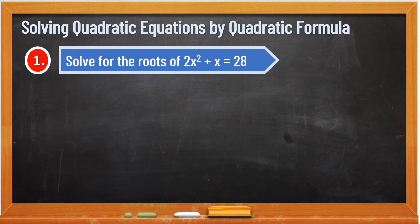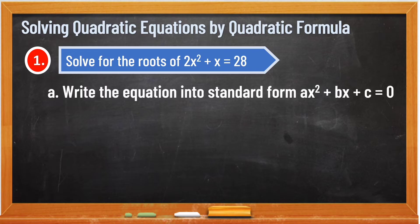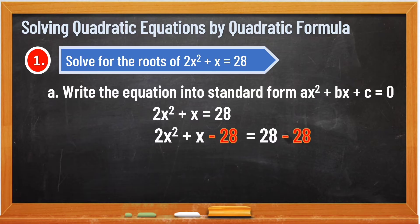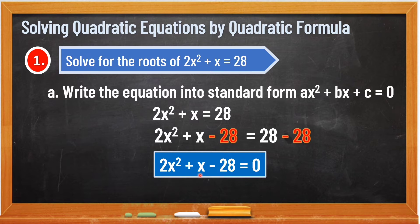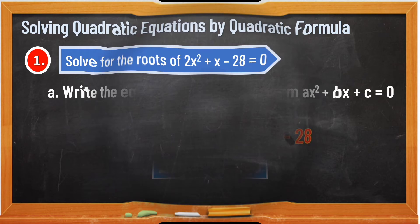Example number 1. Solve for the roots of 2x squared plus x is equal to 28. The first thing to do is to write the equation into standard form: ax squared plus bx plus c is equal to 0. Our given here is not written in standard form because it's not equal to 0. So we apply addition property of equality — we put negative 28 to both sides of the equation so that it becomes equal to 0. The inverse of positive 28 is negative 28, so add negative 28 to both sides and simplify. 2x squared plus x minus 28 is equal to 0. So our quadratic equation is now in standard form.